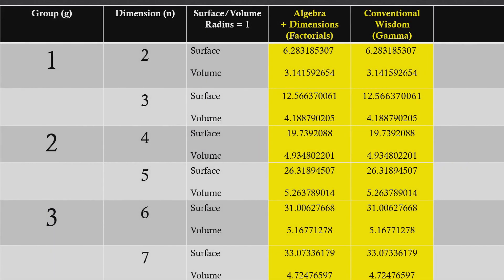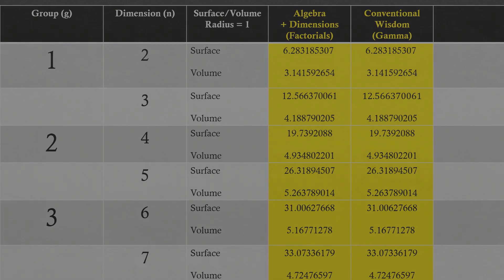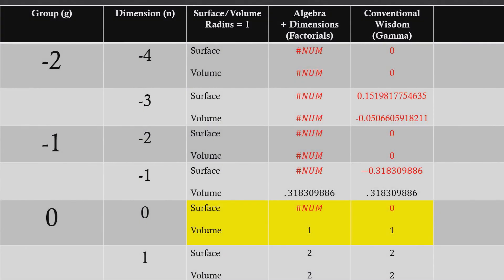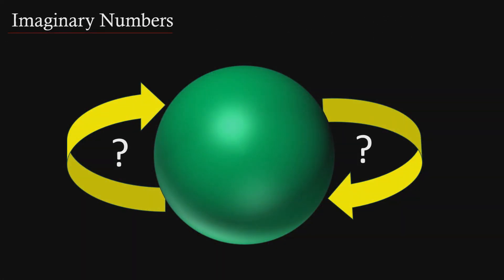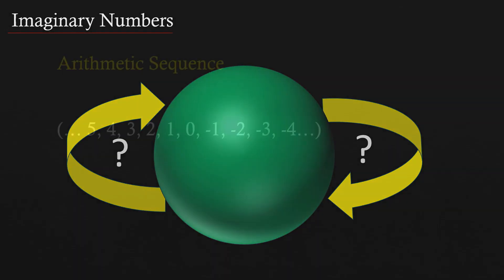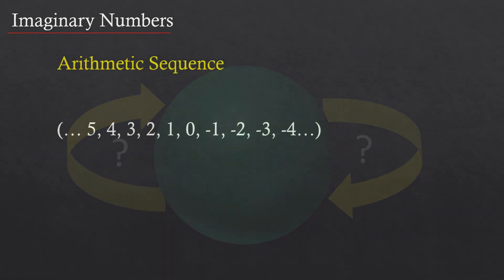The conventional wisdom and Dimensionology agree completely on the calculations for the volume and the surface of spheres in positive dimensions. The disagreement begins with the surface of a point — whether there even is one, or what its value is. The idea of the surface of a point is where we all get to decide for ourselves about whether the concept of dimensional value, and Dimensionology in general, are appropriate. A complete explanation of dimensional value can be found in Episode 3.